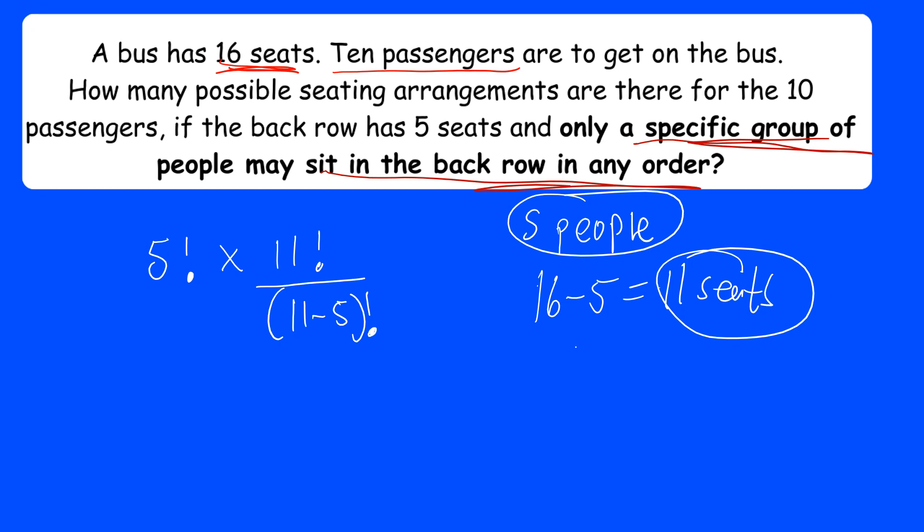This question is tricky because at first you might want to use permutation at the back, but the specific group is already selected, so we use five factorial. The remaining five people go into the 11 remaining seats using permutation: 11 factorial over (11 minus 5) factorial. We then simply multiply the two results to get the total number of arrangements.